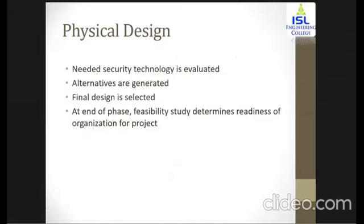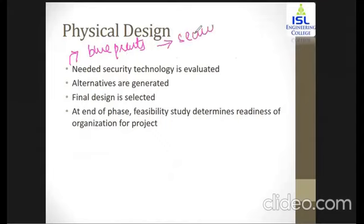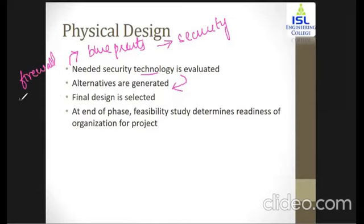The next phase is physical design. Within logical design we made different blueprints; in physical design you identify what technologies are required to implement those blueprints and provide security. When you identify the technology being used, you also identify different alternatives — such as a specific authentication tool, a firewall, or an intrusion detection system.